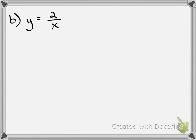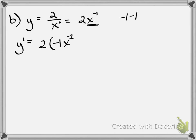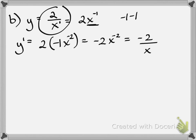Example B: y equals 2 over x. That's immediately unfriendly. We want everything in the numerator if possible, so rewrite it as 2x to the negative 1. Now we have a constant times a variable to a power. The constant multiple rule says bring the constant out front and multiply by the derivative of x to the negative 1, which is negative 1 times x to the negative 2. Multiply the constants together, then rewrite with positive powers.